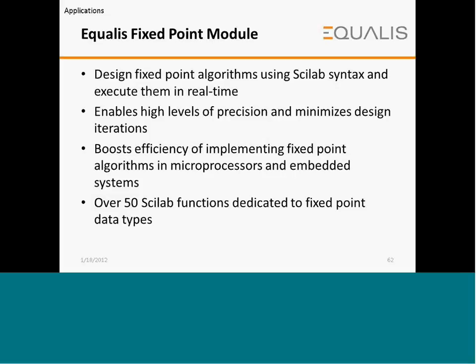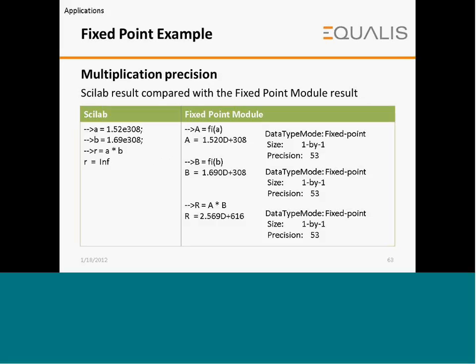The fixed point module allows designing fixed point algorithms using SciLab syntax and executing them in real time. It enables high levels of precision and minimizes design iteration, boosts efficiency of implementing fixed point algorithms in microprocessors and embedded systems, and over 60 SciLab functions are dedicated to fixed point data types. A fixed point example for multiplication precision shows the SciLab equation on the left and the fixed point module on the right.